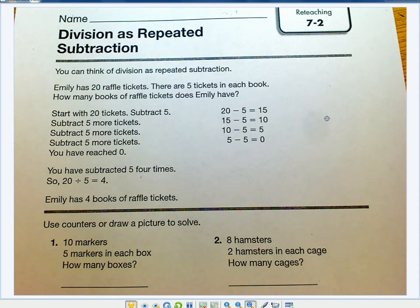Hello folks, we're moving on to 7-2, which is division as repeated subtraction. This might be a new concept for parents, so buckle in and I think we can get through it pretty easily.